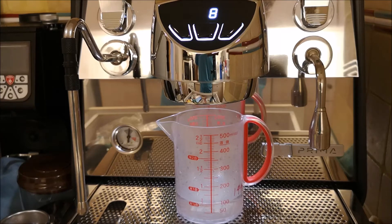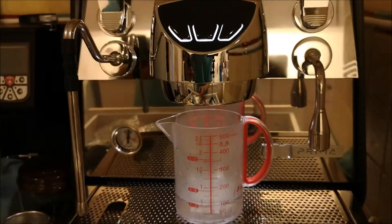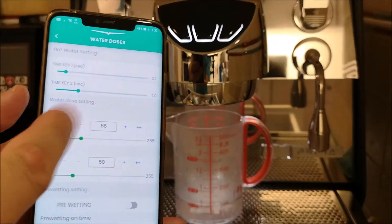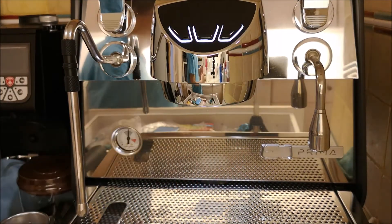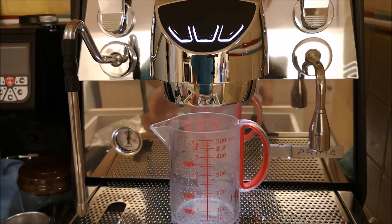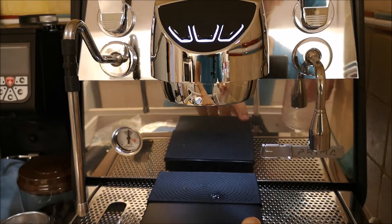So eight seconds for 50 milliliters of water. So you can set it via the app. The second way of doing it, the more accurate way, would be using a scale.